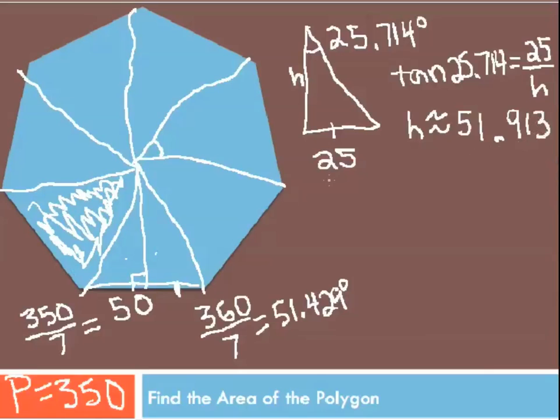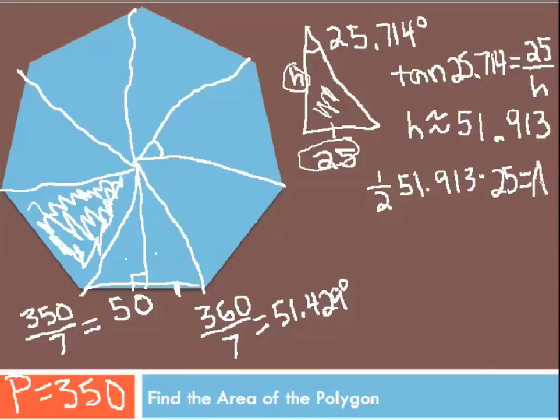So now, we have the height of the triangle and we have the base of the triangle. We can use that to find the area of the right triangle here. The area is equal to one-half times the height, which is 51.913, times the base, which is 25.